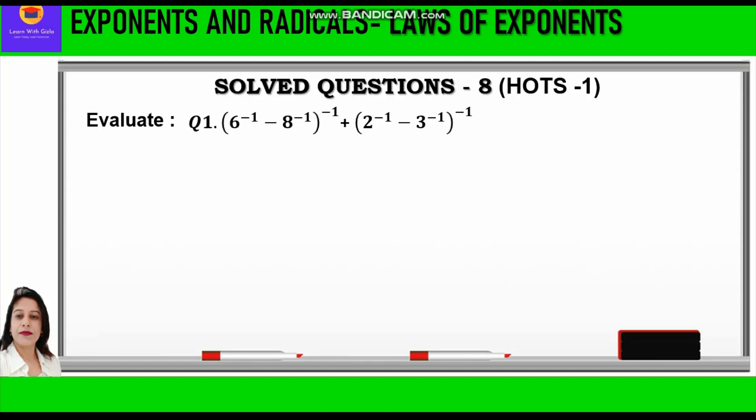Question 1 is: 6 raised to power minus 1, minus 8 raised to power minus 1, whole raised to power minus 1, plus another bracket: 2 raised to power minus 1 minus 3 raised to power minus 1, whole raised to power minus 1. If you observe, all these terms have negative exponents, which we will convert into positive.